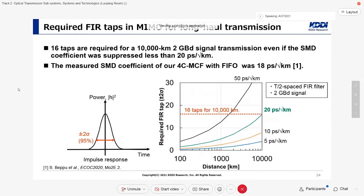Here, the measured SMD coefficient of our coupled four-core fiber with FIFO was 18 picosecond per square root of kilometer. Therefore, we have to implement more than 16 FIR taps in MIMO DSP for long-haul coupled four-core fiber transmission.